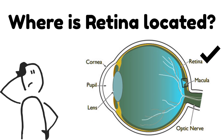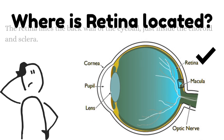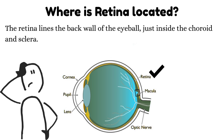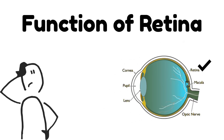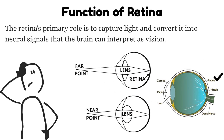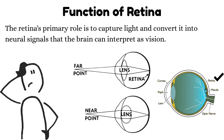Where is retina located? The retina lines the back wall of the eyeball, just inside the choroid and sclera. Function of Retina: The retina's primary role is to capture light and convert it into neural signals that the brain can interpret as vision.